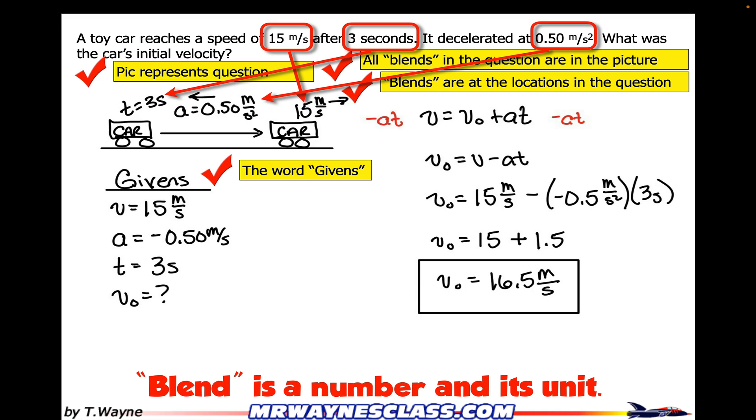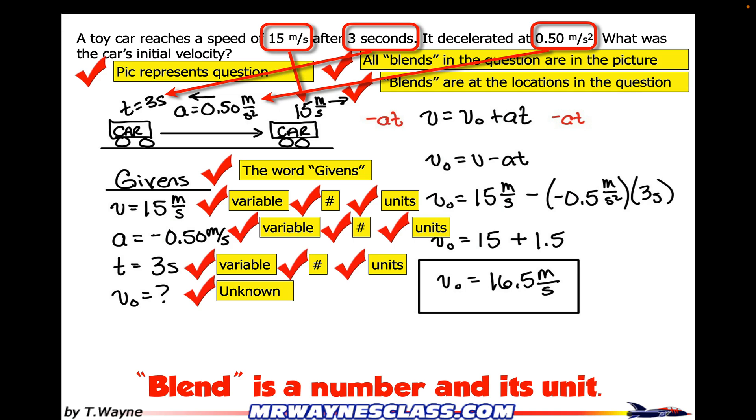And then when I look through that, look at my givens, I'm looking at my blends. So I'm going to have a variable, and then that's going to equal a blend, which is a number and a unit. Not just any unit, but it's got to be the correct unit. And then I'm going to do that over and over for all the problems. So there's a lot to check there.